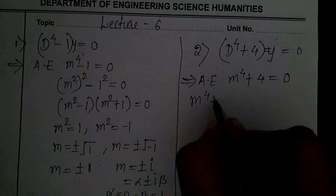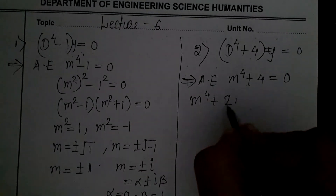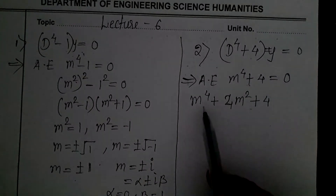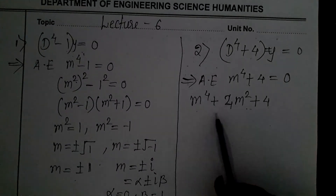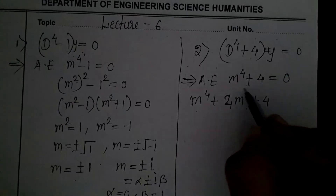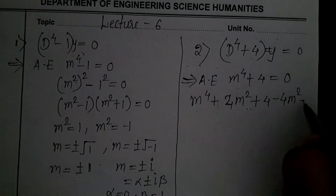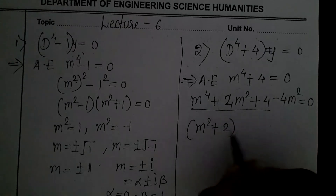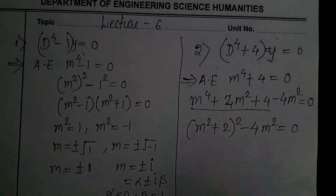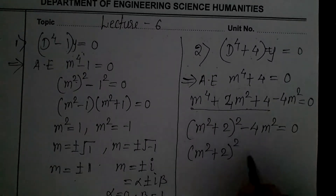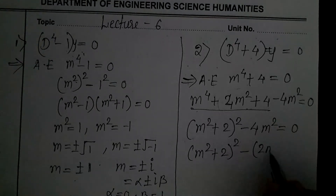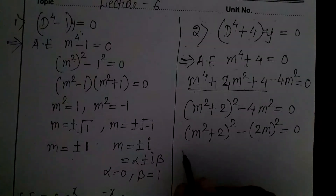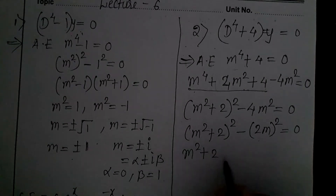We rewrite m⁴ + 4 by adding and subtracting 4m²: m⁴ + 4m² + 4 - 4m² = 0. The first three terms form (m² + 2)², so we have (m² + 2)² - 4m² = 0. Since 4m² = (2m)², this becomes (m² + 2)² - (2m)² = 0, which is now a difference of squares: (a² - b²) = (a + b)(a - b).